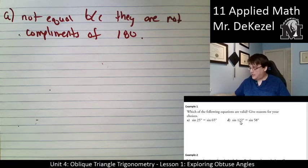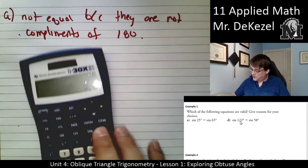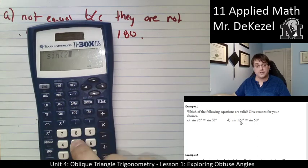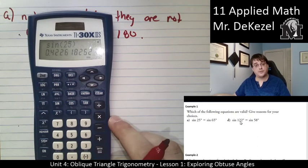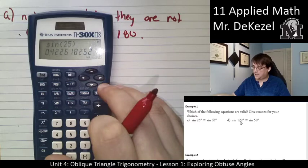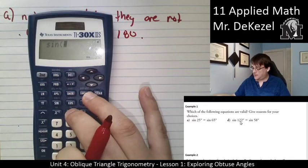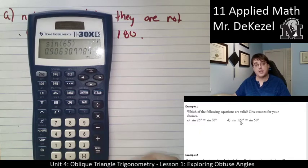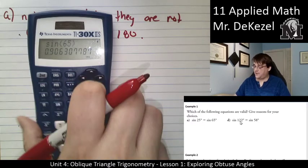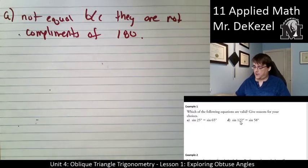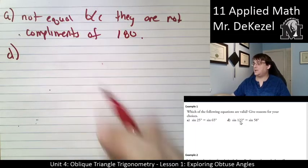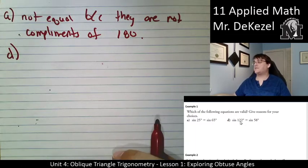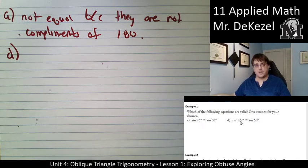Not equal because they are not complements of 180. And we could try them in our calculator just to find out to make sure sine of 25 equals .4226. Let's remember that, sine of 65, .9096. So those are definitely not the same. That has been confirmed.